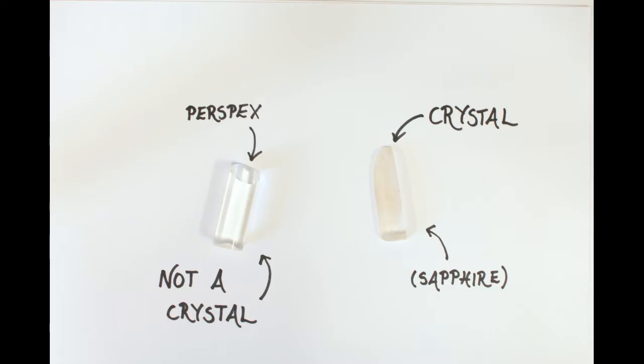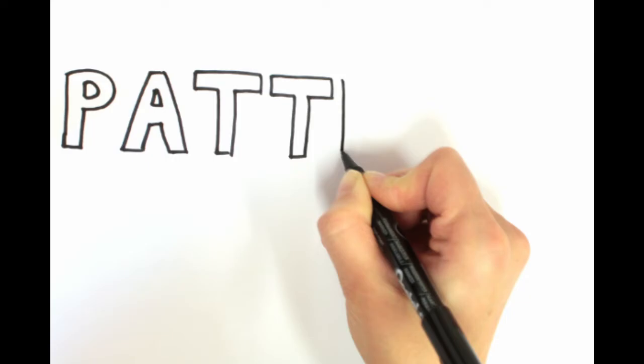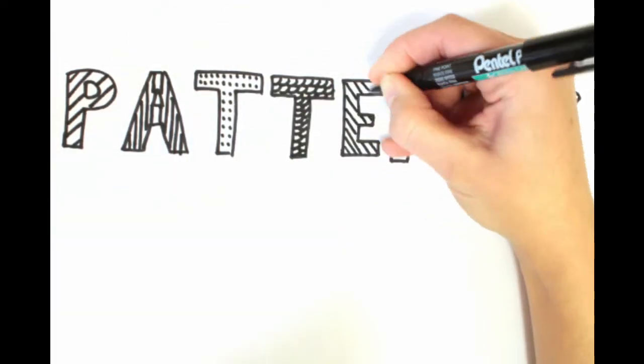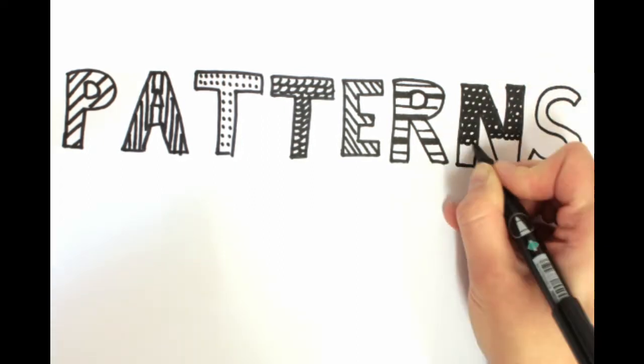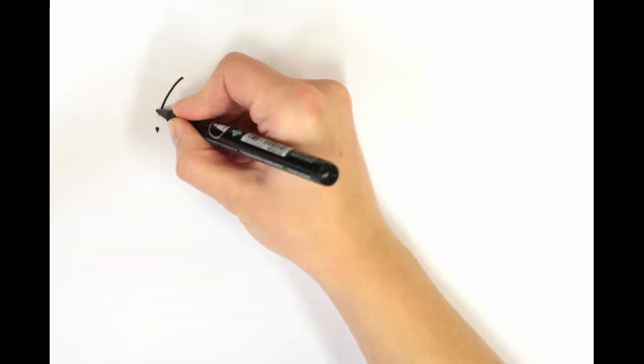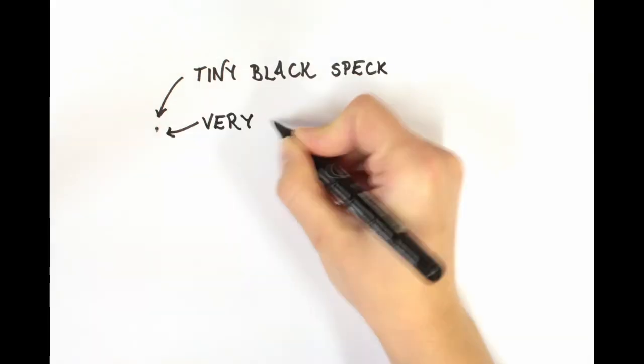To know whether something is a crystal, you have to look a bit deeper. You have to look at how it's put together. The essence of a crystal is that it has a repeating structure. There are patterns in the stuff that it's made of.